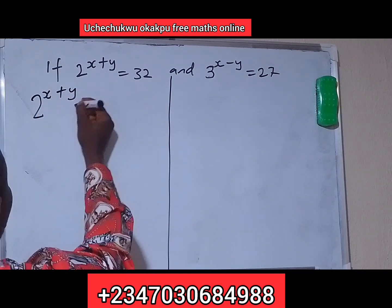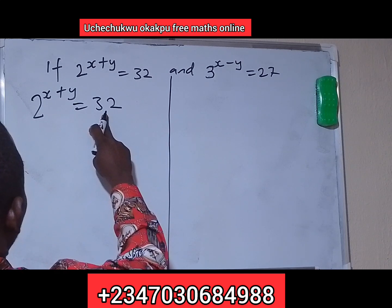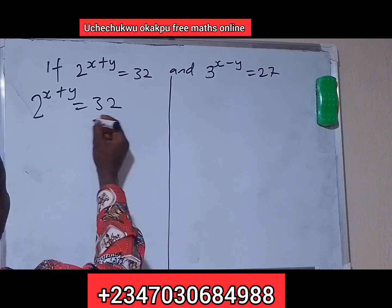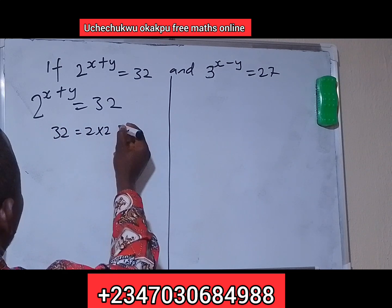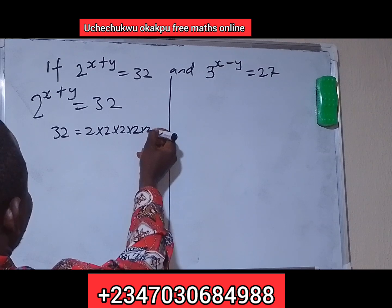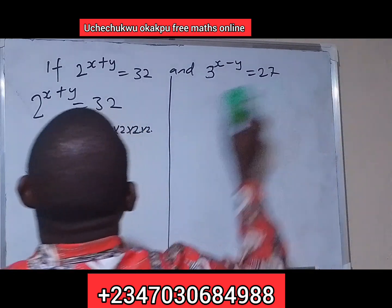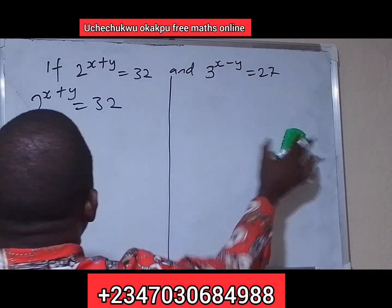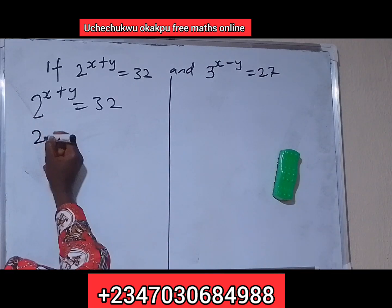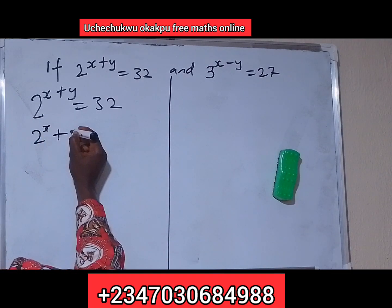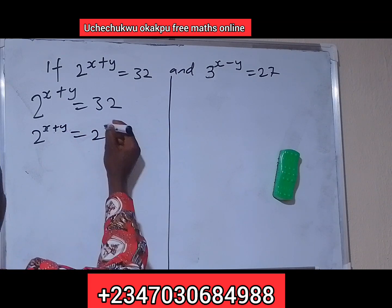So here we have 2 raised to the power x plus y is equal to 32. Now 32 equals 2 times 2 is 4, times 2 is 8, times 2 is 16, times 2 is 32 — that is 2 raised to the power 5. So we have 2 raised to power x plus y is equal to 2 raised to power 5.